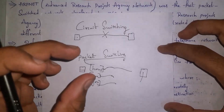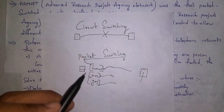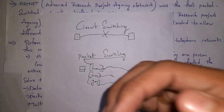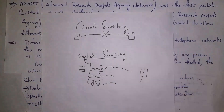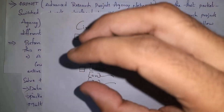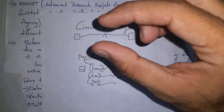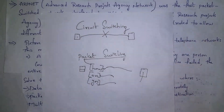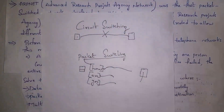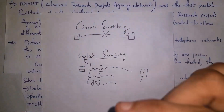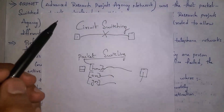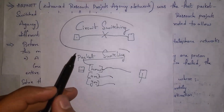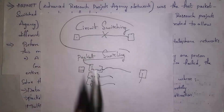In packet switching, data is divided in the form of packets and they reach the destination, and after reaching the destination they reassemble so the person can hear the correct message. When compared to circuit switching, in packet switching data is transferred in the form of packets so data transfer is very fast, as each packet will find the best route. This is the difference between packet switching and circuit switching.